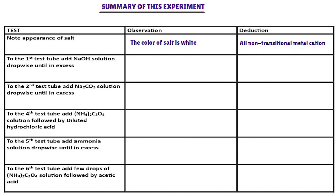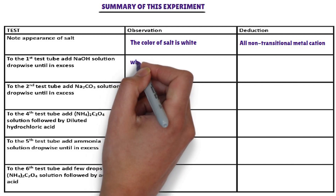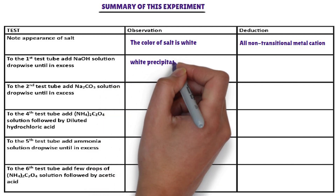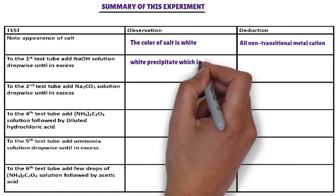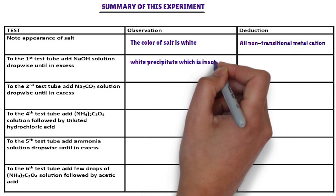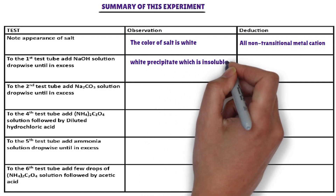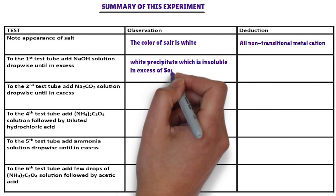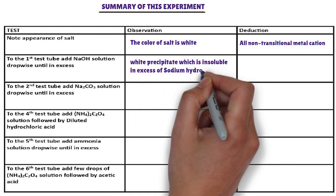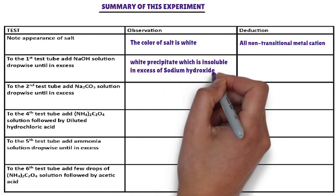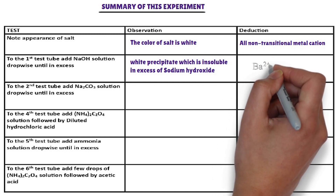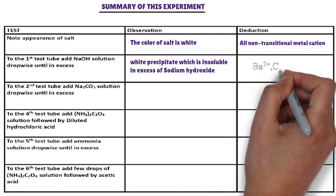In the first test tube, sodium hydroxide solution is added. The cations that form a white precipitate with sodium hydroxide, and the precipitate is insoluble in excess sodium hydroxide, are magnesium ion, calcium ion, and barium ion.